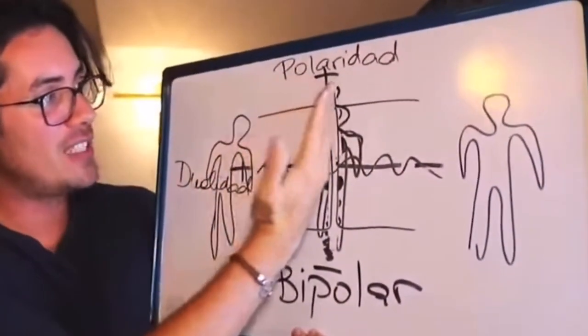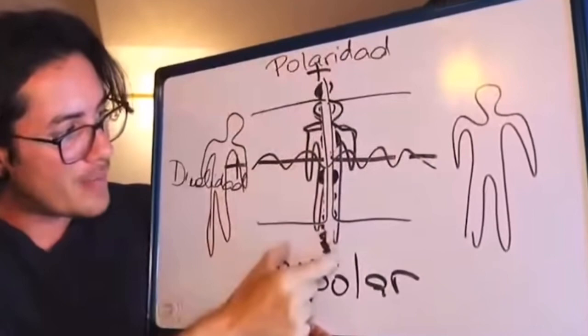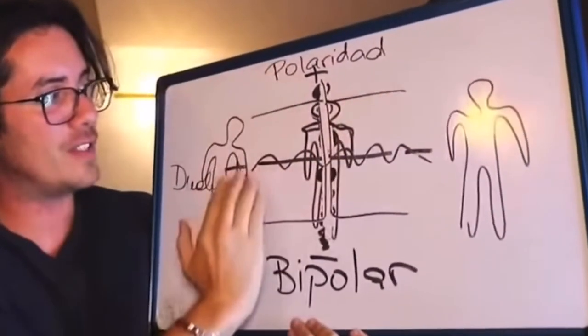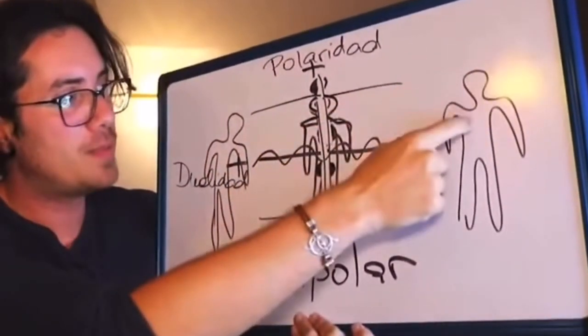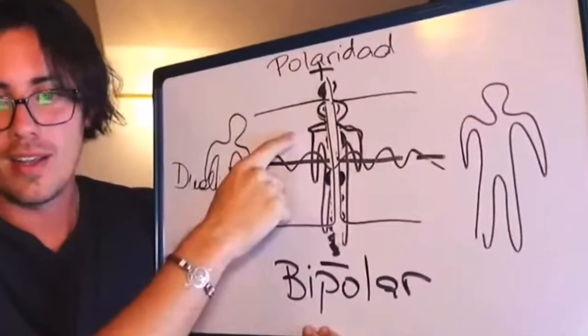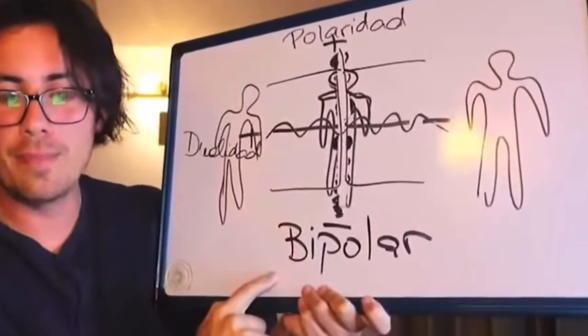Duality means that I divide myself in two. I cannot find my axis, so I divide myself in two. With this person, I am like this, and with this person, I am like that. This is what we call bipolarity.